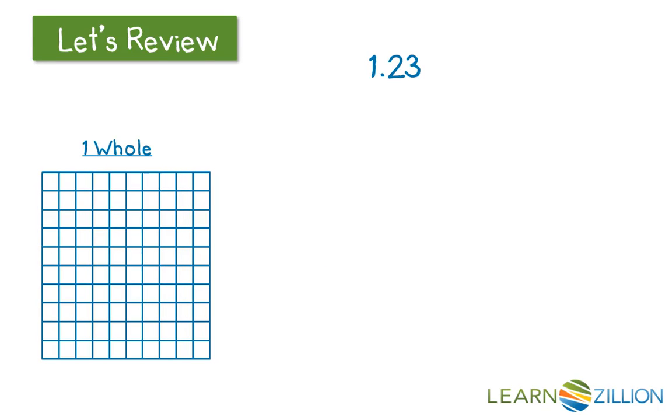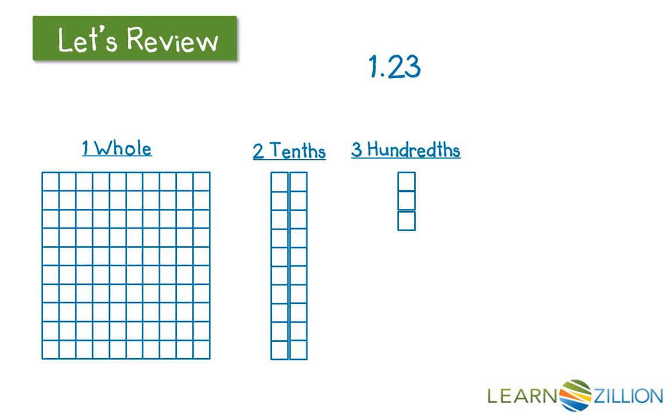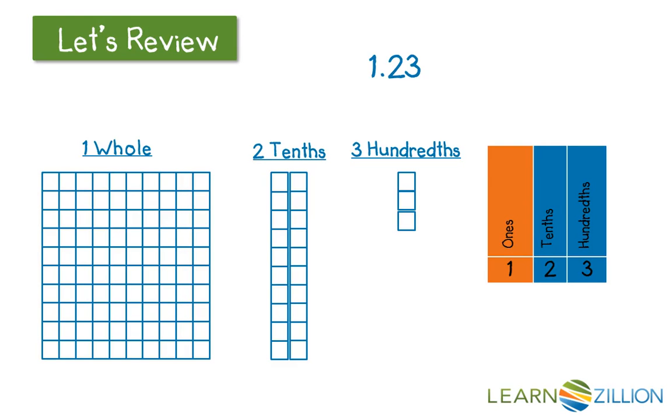Here's how it would look. For 1 and 23 hundredths, we would have one whole, 2 tenths, and 3 hundredths. You can see that on our base 10 chart that equals 1 and 23 hundredths.